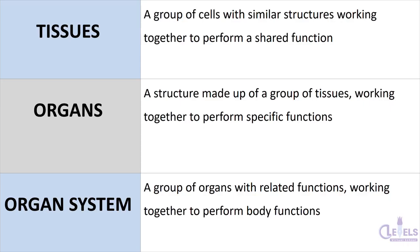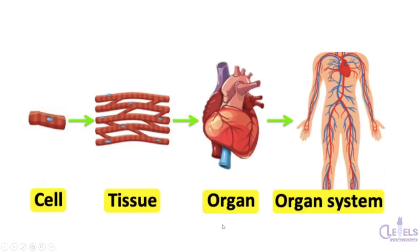In this chapter, we will also be studying the organization of life. The basic unit of life is the cell, which has all the organelles that perform specific functions. A group of cells with similar structures, when they work together and perform a shared function, they form tissues. These tissues, when they group together to form a structure, make an organ. An organ is a structure made up of a group of tissues working together to perform specific functions.